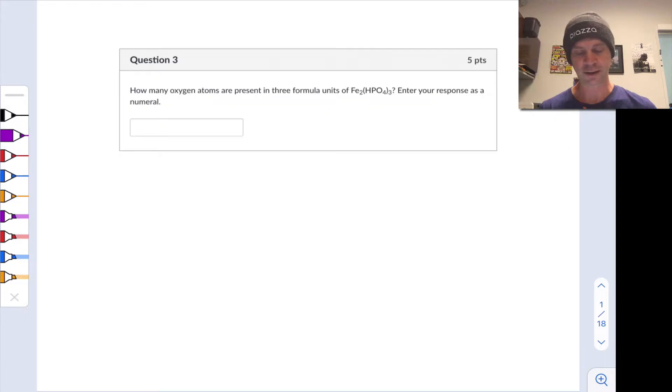The first question says, how many oxygen atoms are present in three formula units of Fe2(HPO4)3? I'm going to underline 'three formula units' and write the number three here to remind myself that we're thinking about three of these, and I'm going to rewrite the formula a little bit larger here.